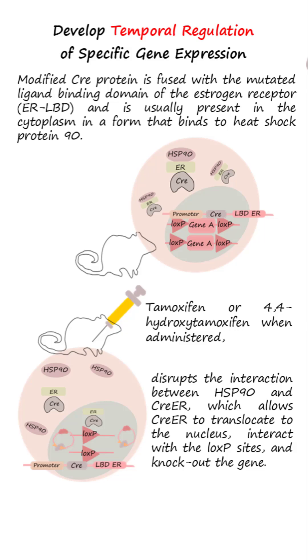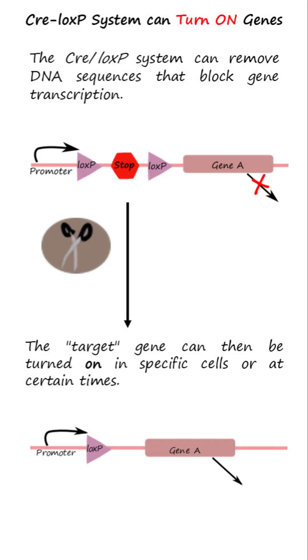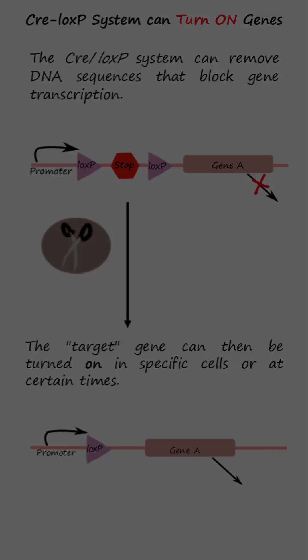Cre-ER then interacts with the loxP sites and knocks out the gene. The Cre-loxP system can also be used to remove DNA sequences that block gene transcription, allowing the target gene to be turned on in specific cells or at certain times.